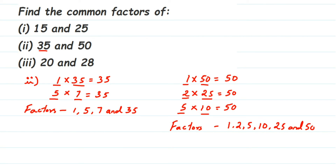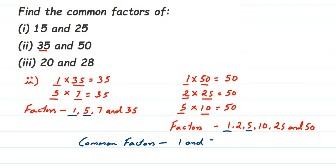Now finding the common factors of 35 and 50: 1 is common for all numbers. 5 is also common in both. We don't have 7 common, and no other number is common. So the common factors of 35 and 50 are 1 and 5.